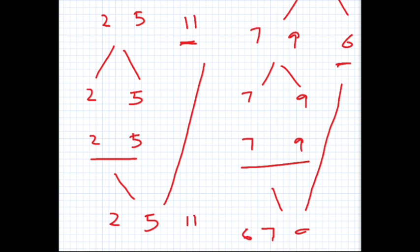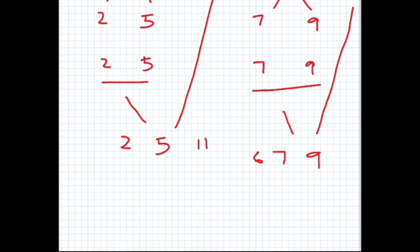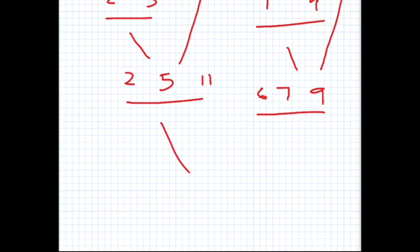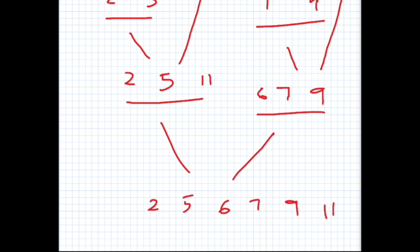Now 6, 7, and 9 are written in sorted order. Note that this list is sorted and this list is sorted. Now we merge them and get: 2, 5, 6, 7, 9, 11. So basically the splitting part is like a tree whose root is on top, and the merging part is a tree whose root is at the bottom. This is a simple example of how merge sort works on a given array.